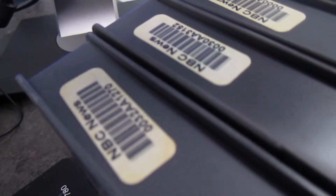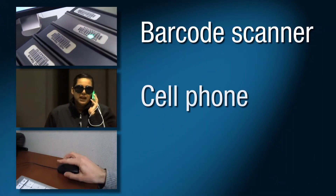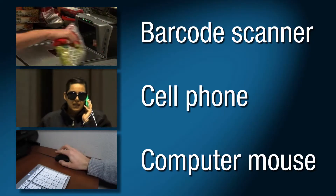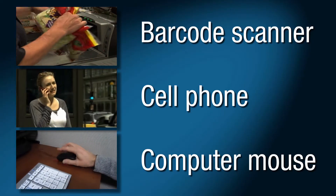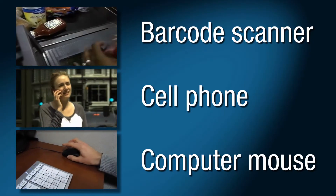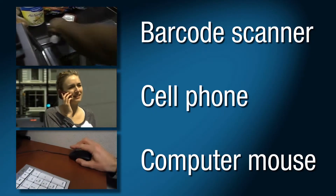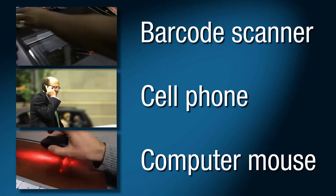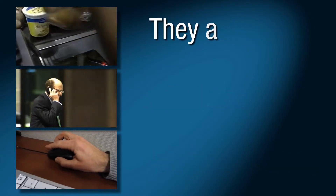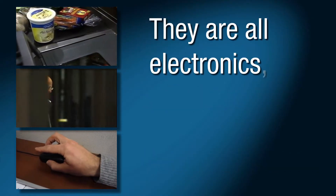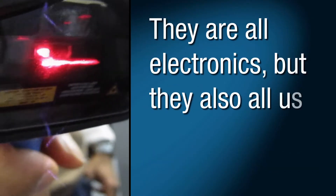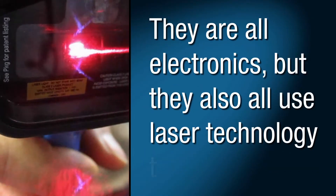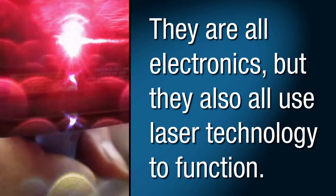Here's a pop quiz. What do these three things have in common? A barcode scanner, a cell phone, and a computer mouse. They are all electronics, but they also all use laser technology to function.